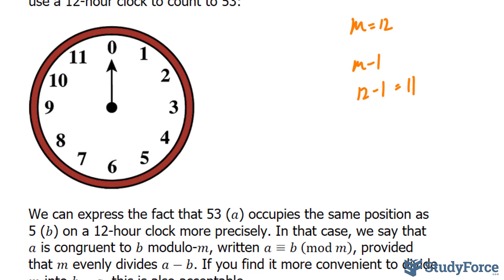we can express the number 53 as the number A, and it occupies the same position as five on a 12 hour clock more precisely. The way we found the number five is because 12 fits into 53 four times, and at the fourth revolution, we have 48. It begins again after 48. So this is 49, 50, 51, 52, 53.